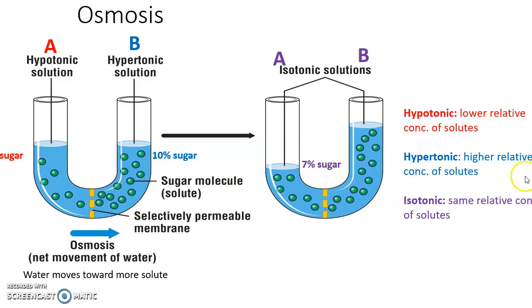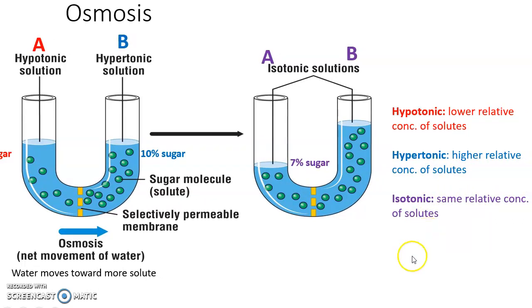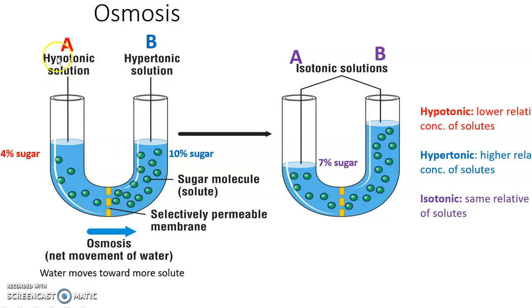Hypotonic, lower relative concentration of solutes. Hypertonic, higher concentrations of solutes. Isotonic, same concentration on both sides. So over here with this thing and the membrane, side A is hypotonic. It's 4% sugar. Side B is hypertonic because it's 10% sugar. Osmosis will occur to solution B, going from A to B, to the hypertonic solution. And again, eventually, if possible, it'll become isotonic, 7% sugar on both sides.